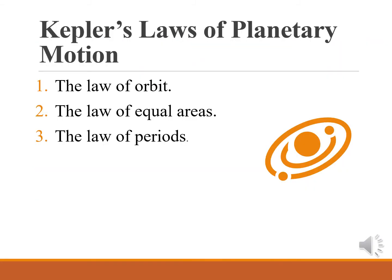In Astronomy, Kepler's Laws of Planetary Motion, published by John Kepler between 1609 and 1619, describe the orbits of planets around the Sun. The same laws are applicable to satellites, which are man-made objects orbiting around the Earth. The three laws of Kepler are: first, the Law of Orbit; second, the Law of Equal Areas; and third, the Law of Periods.